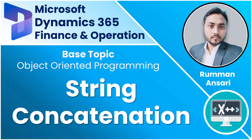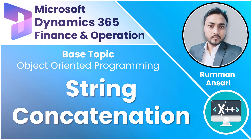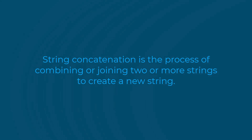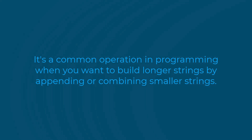Hello, welcome back to X++ programming language. In this video we'll talk about string concatenation. First we'll define what string concatenation is, then I'll show you two different processes for how you can concatenate your string, and then we'll move to a practical example. String concatenation is the process of combining or joining two or more strings to create a new string. It's a common operation in every programming language when you want to build longer strings by appending or combining smaller strings. In X++ and C# programming language, you can use the plus operator to concatenate a string.